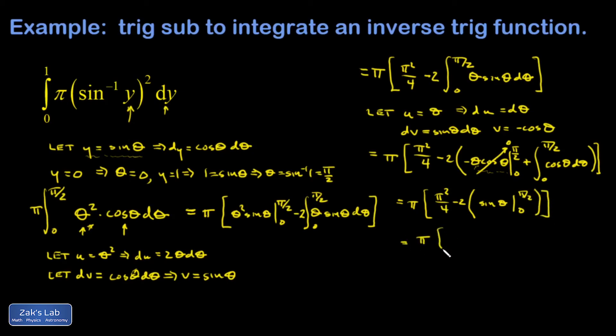So I have pi times pi squared over four minus, I'll write the two there. When I plug in the upper limit, I get one. Lower limit gives me zero. So minus two times one.